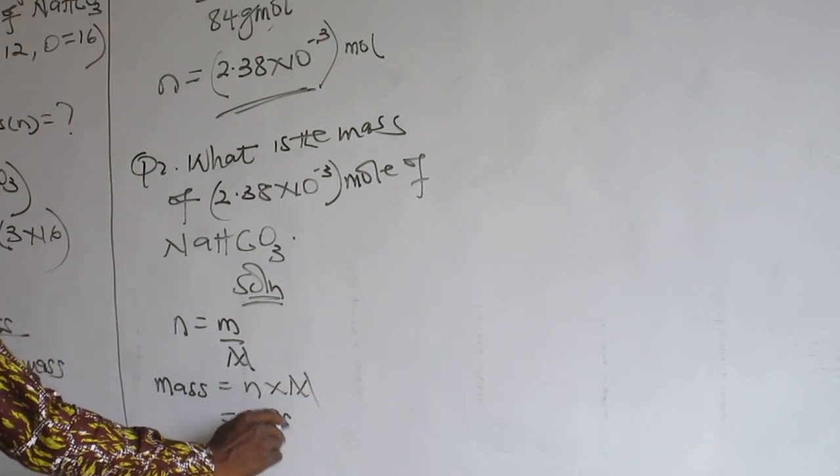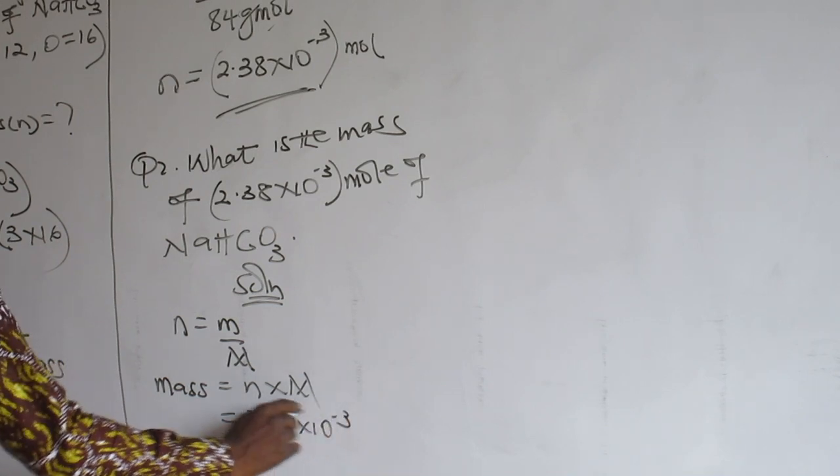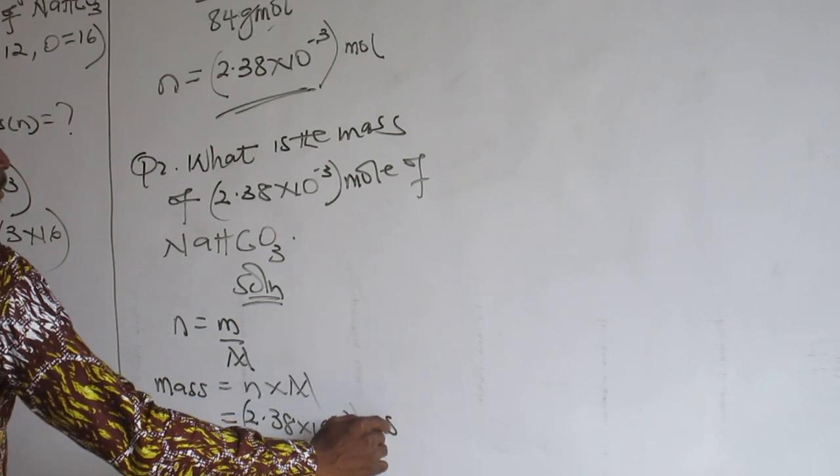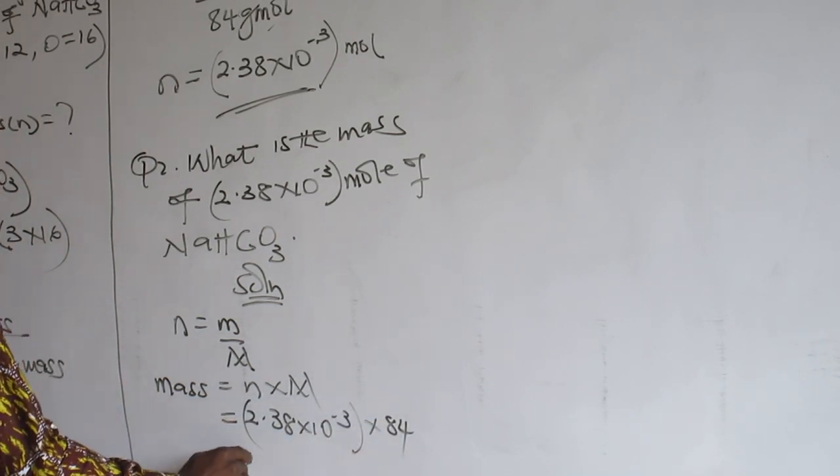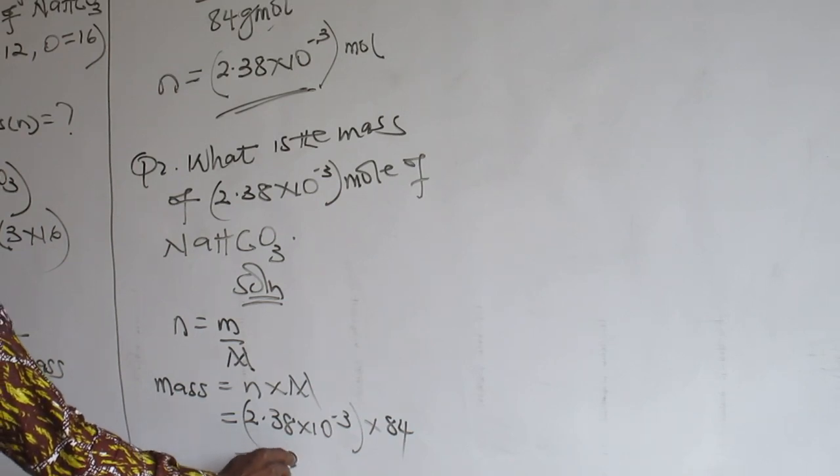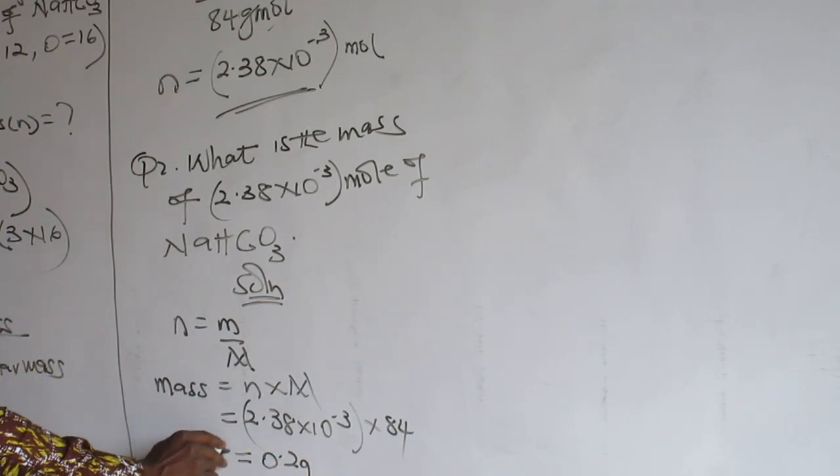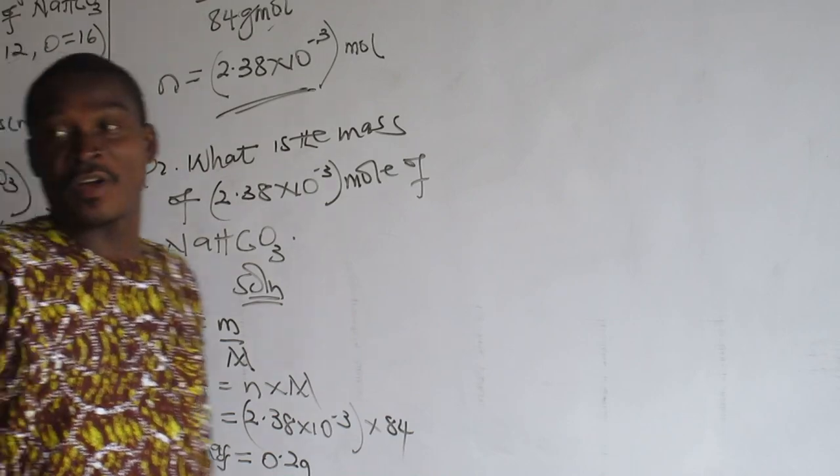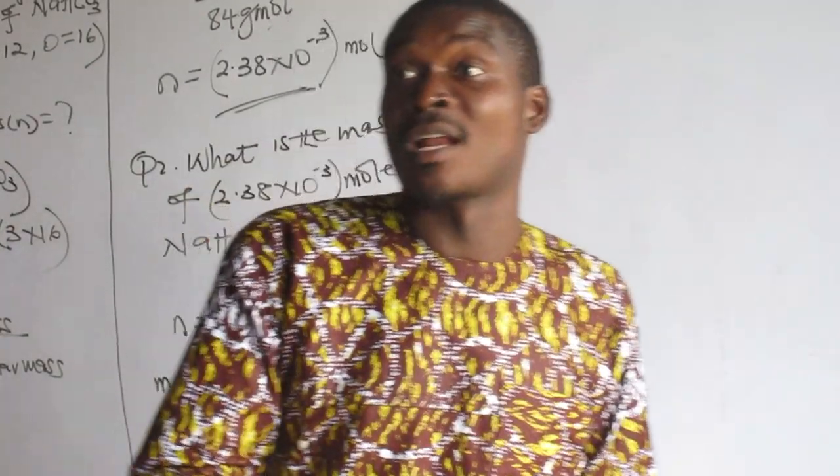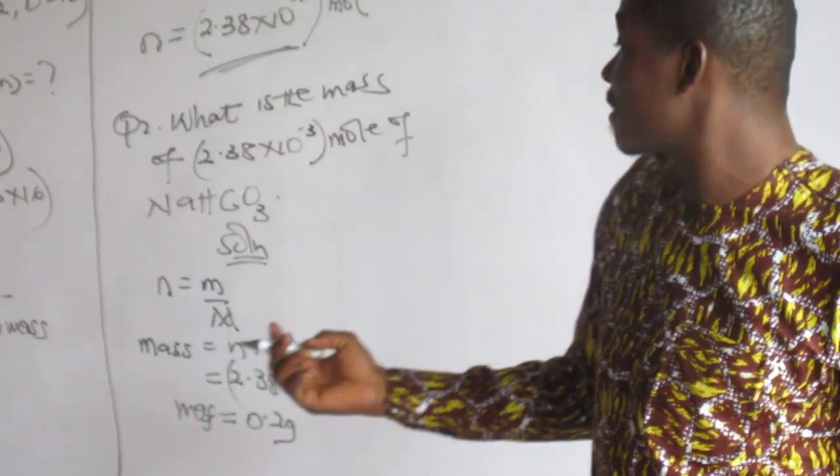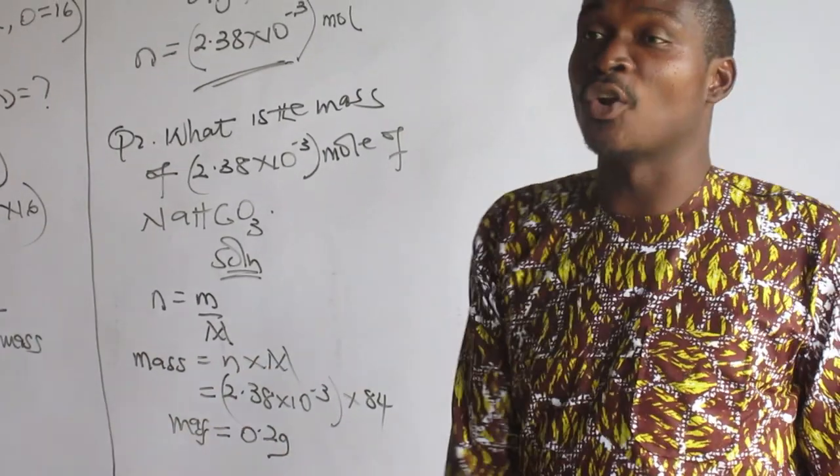And number of moles is 2.38×10⁻³ moles. Agreed. And the molar mass is 84. Now what is the mass? You get 0.2 grams. So when I'm asking you to find the mass, use the same formula. Just isolate the parameters and know what to do.